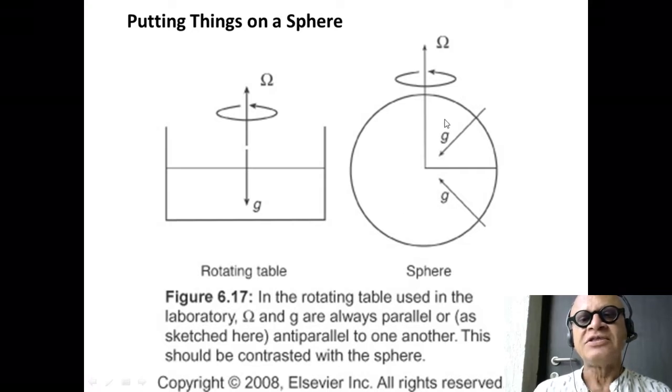Depending on where you are on the sphere, the distance from the rotational axis is going to change, and the direction of the rotational effect can be well defined, but the so-called measured gravity or modified gravity has to take into account the changing distance from the rotational axis as you go away from the equator.